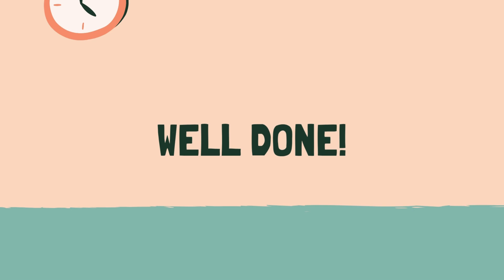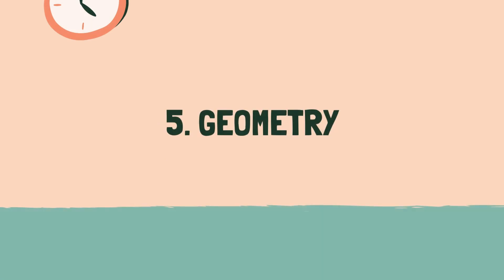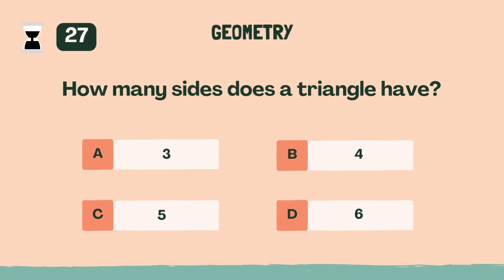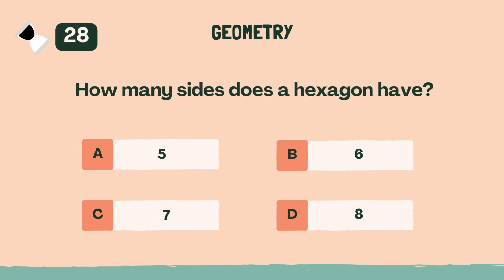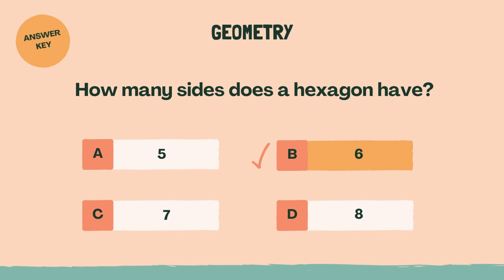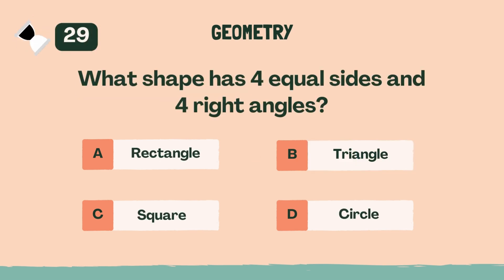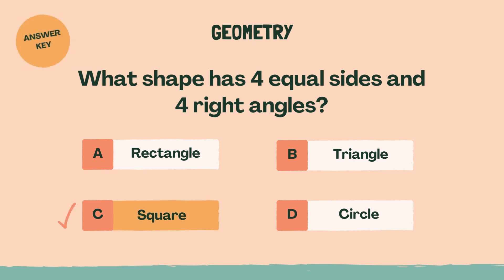Well done. Let's move on to the next category. Category 5: Geometry. 3, 2, 1, go! How many sides does a triangle have? A, 3. How many sides does a hexagon have? B, 6. What shape has 4 equal sides and 4 right angles? C, square.